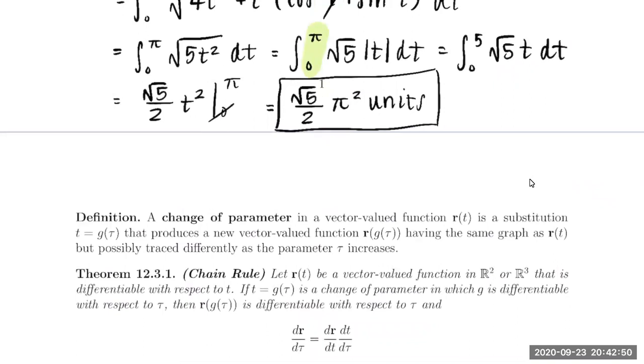All right, so we have a definition. A change of parameter in a vector value function r of t is a substitution t equals g of tau that produces a new vector value function r of g of tau, having the same graph as r of t, but possibly traced differently as the parameter tau increases.